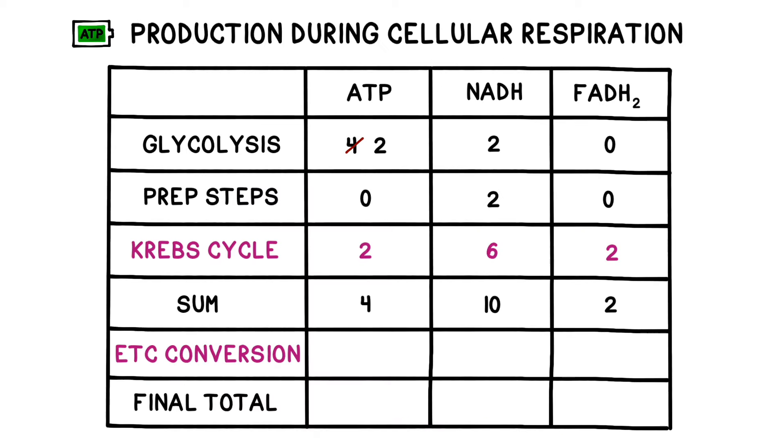Remember how we figured out how many protons a molecule of NADH and FADH2 would yield under ideal conditions? This is where we cash in those molecules for ATP. For each molecule of NADH, we pumped three protons and can recharge three molecules of ATP. For each molecule of FADH2, we pumped two protons and thus can recharge two molecules of ATP. In total, we made four ATP plus another 30 from NADH and another four from FADH2.